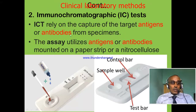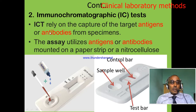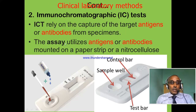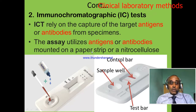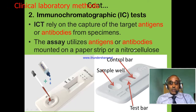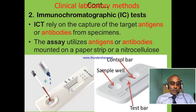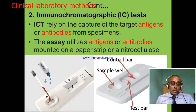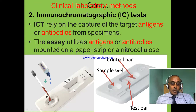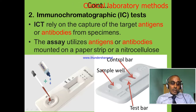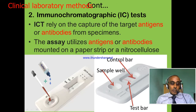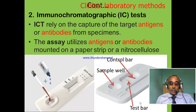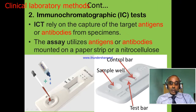The second serological test is the immunochromatographic test, or ICT. In this test, ICT depends on the capture of the target antigen or antibody from the specimen. The ICT utilizes antigen or antibody coated on a nitrocellulose paper or strip. Using the cassette method, the antigen is coated at the middle to identify antibody. When sample and buffer are added, the sample with antibody migrates and binds the antigen at the middle of the cassette. The result is interpreted by observing the test bar and the control bar.